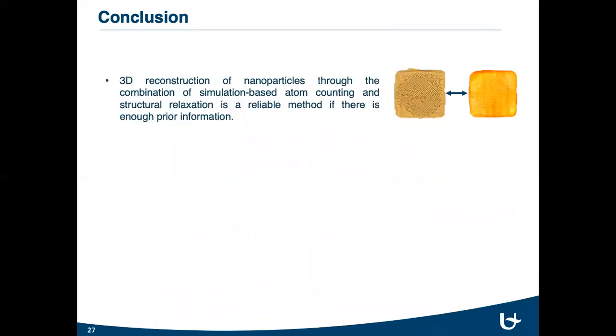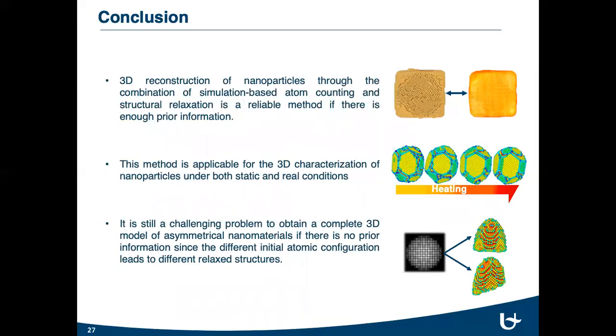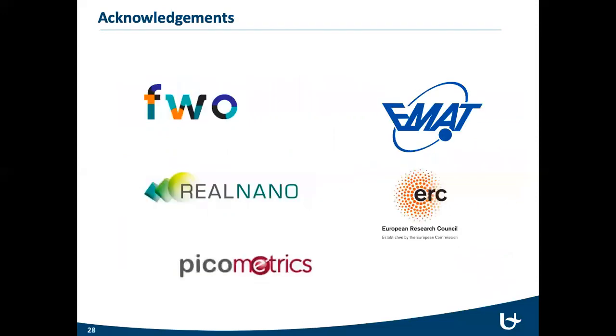In conclusion, the three-dimensional reconstruction of nanoparticles through the combination of simulation-based atom counting and structural relaxation is a reliable method if there is enough prior information. And this method is applicable for the three-dimensional characterization of nanoparticles under both static and real conditions. However, it is still a challenging problem to obtain the complete three-dimensional model of asymmetrical nanomaterials if there is no prior information since the different initial atomic configuration leads to different relaxed structure.